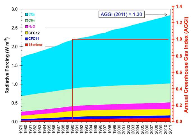Human activities since the beginning of the Industrial Revolution around 1750 have produced a 40% increase in the atmospheric concentration of carbon dioxide (CO2), from 280 ppm in 1750 to 406 ppm in early 2017. This increase has occurred despite the uptake of more than half of the emissions by various natural sinks involved in the carbon cycle.